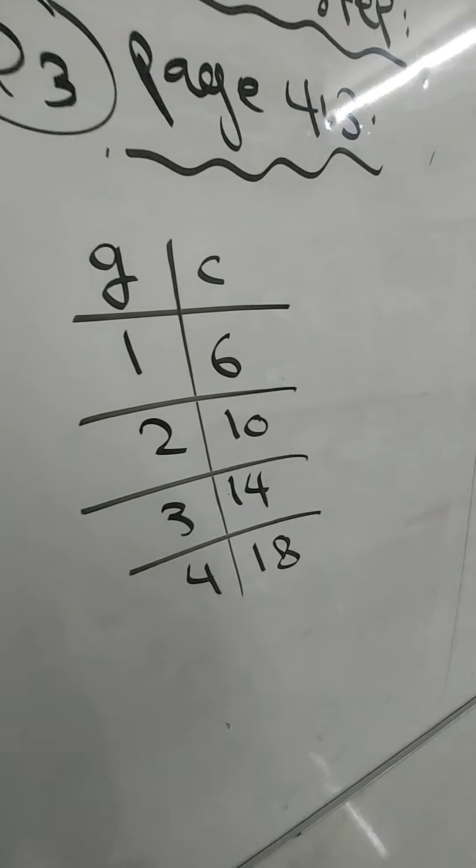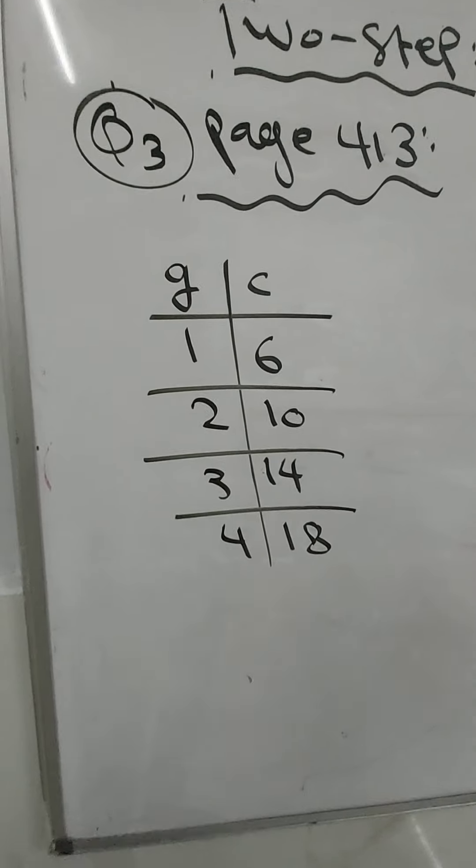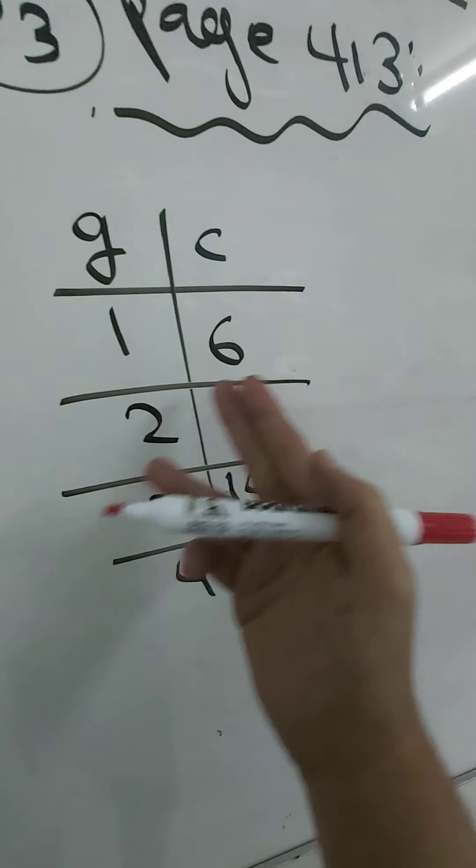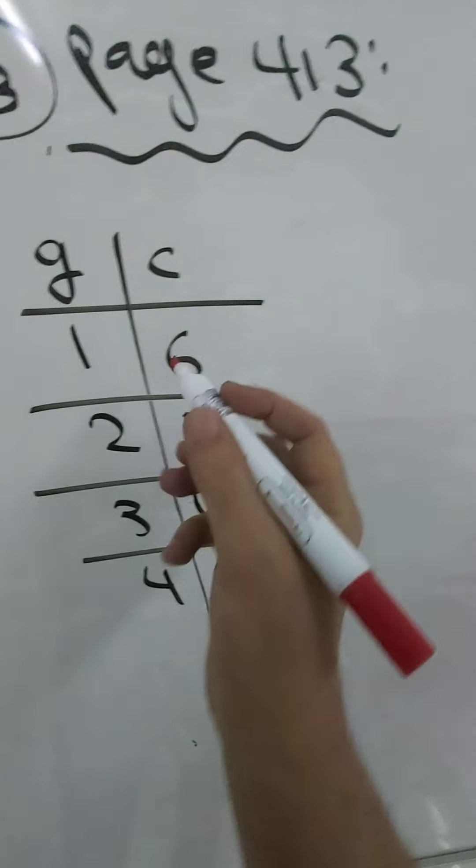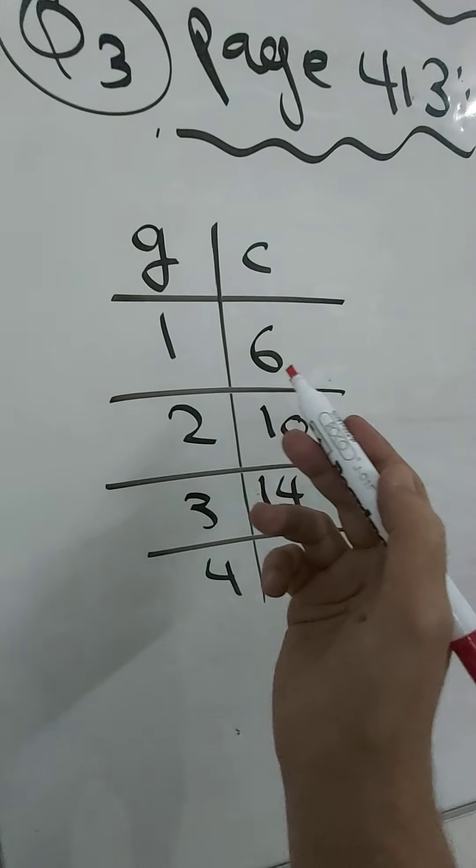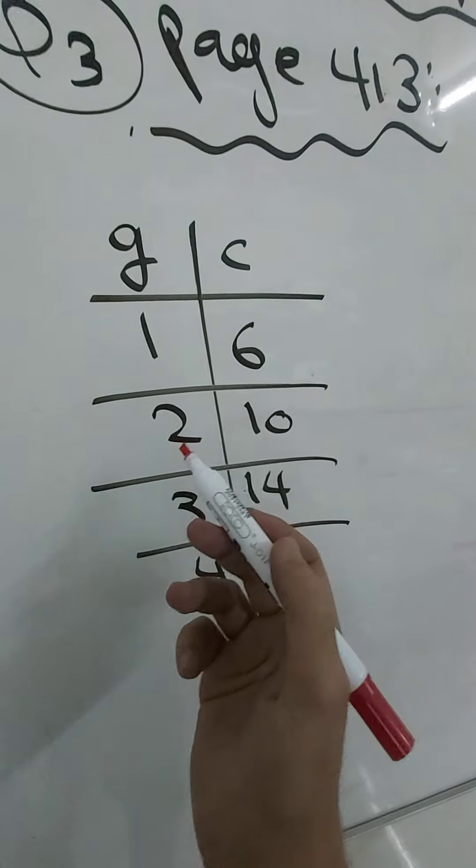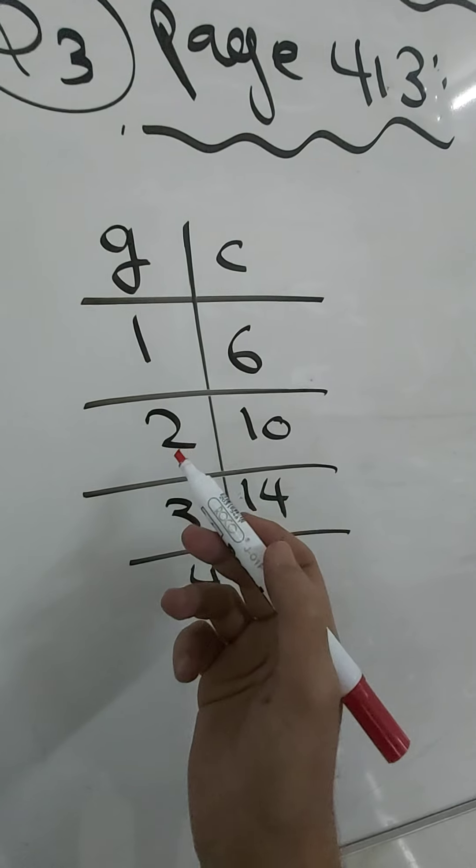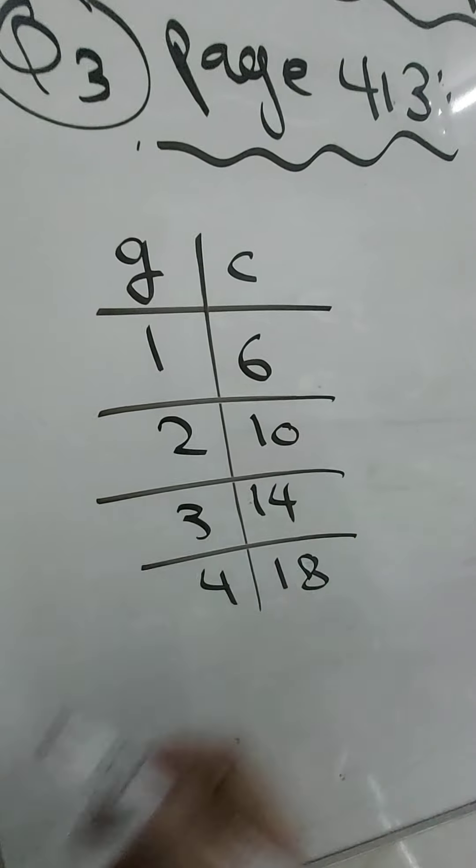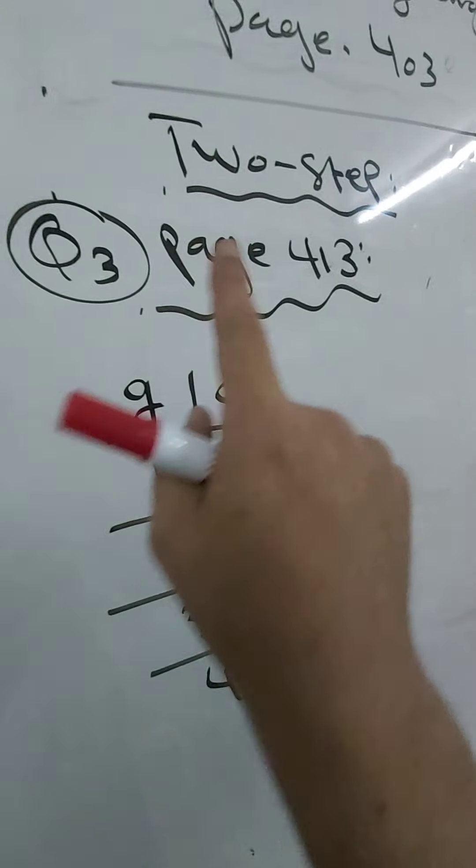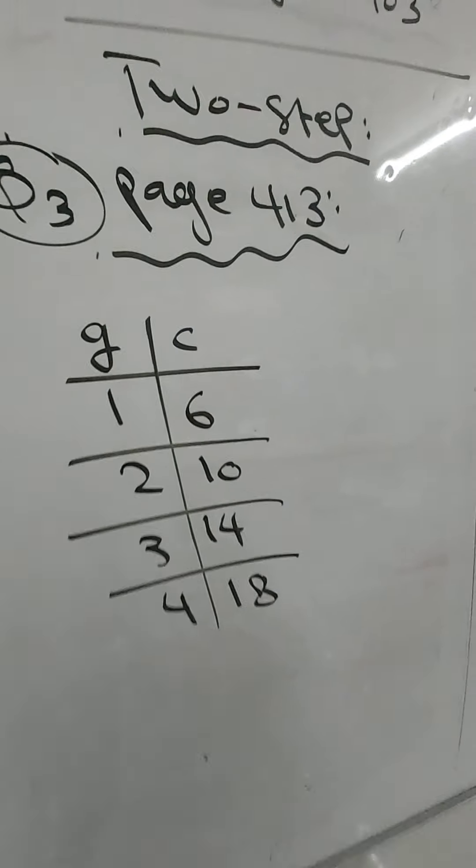Now here, one can become six either by adding five or multiplying by six. But two, if you add five or multiply by six, you won't get ten. So in this case, the question asks for a two-step equation.